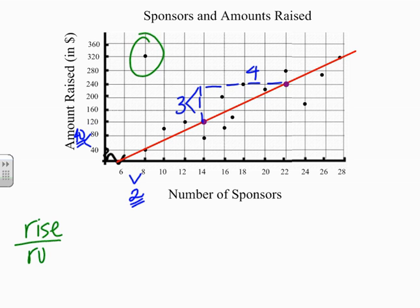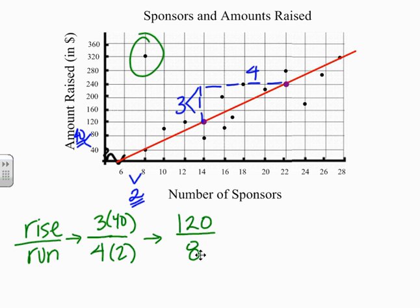We're going to use that to calculate what our slope is. We're going to take a look at rise over run. We're going to say that this is three divided by four. It's really not three, but it's three boxes times 40 and four boxes times two. We simplify that to get 120 divided by 8. We can reduce this - four can go into both of these, giving us 30 divided by 2, which when reduced down is 15. So the slope of this line would be 15.